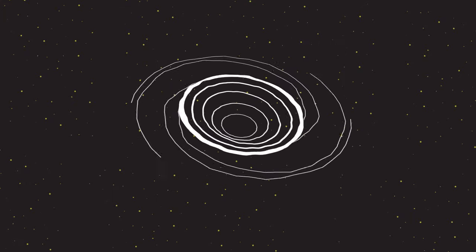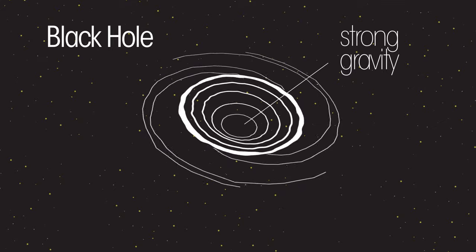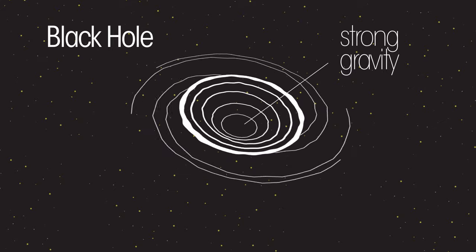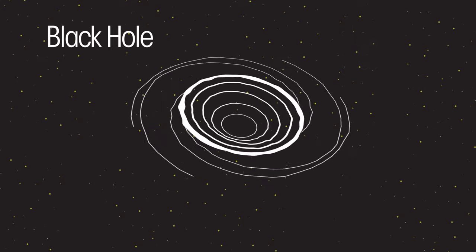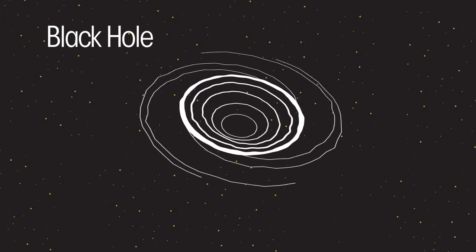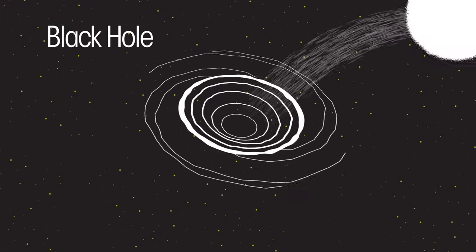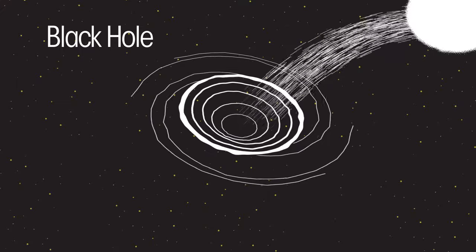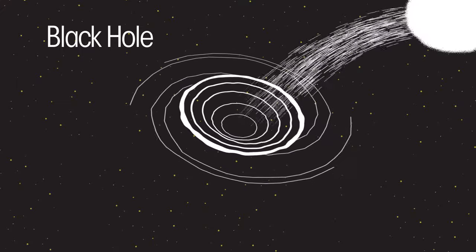A black hole has such strong gravity that even light cannot escape it. We cannot yet observe a black hole directly, but we can detect it by the effects it has on nearby objects such as stars. Now that's one star-studded life cycle.